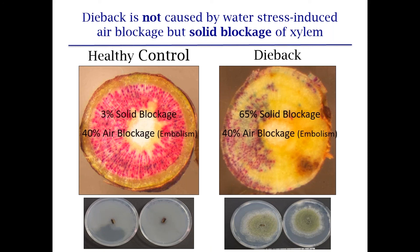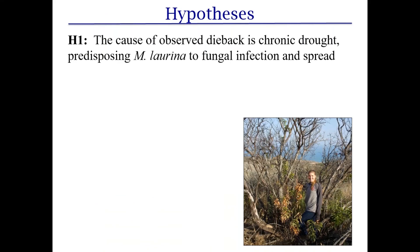This suggests the chronic drought hypothesis: drought predisposes Malosma laurina to fungal infection. The plant is so weakened it doesn't produce enough carbon to wall off the fungus, and it can't transport carbon to the infection site to stop it.